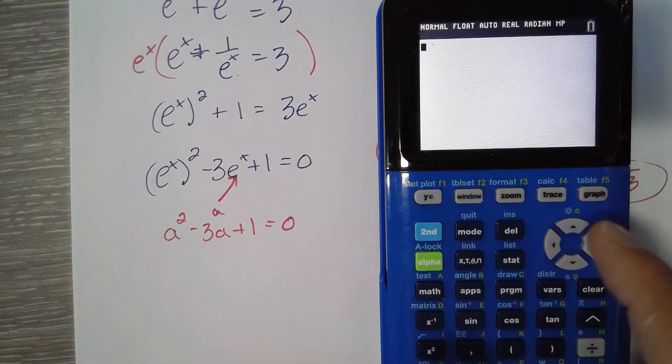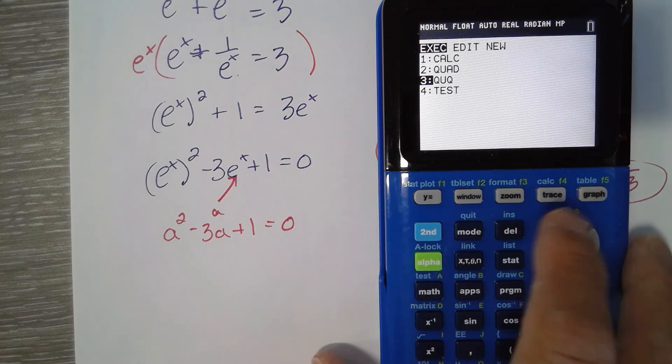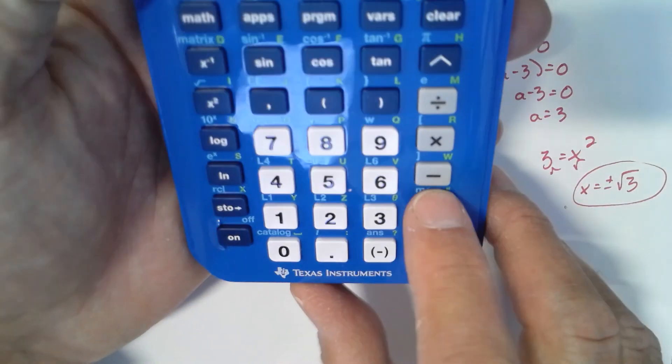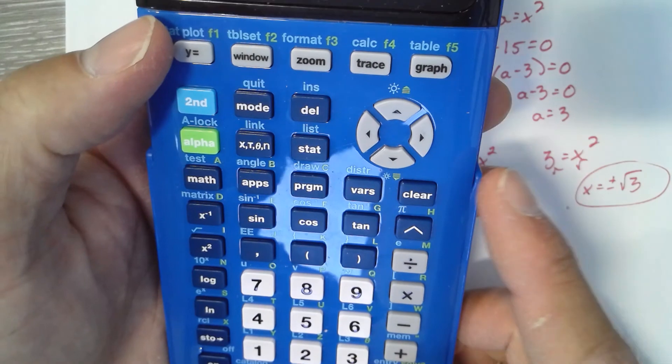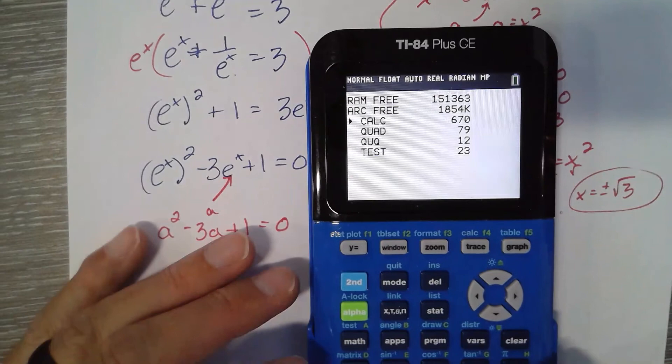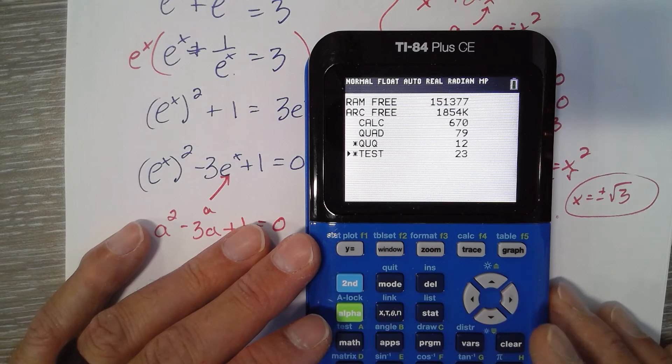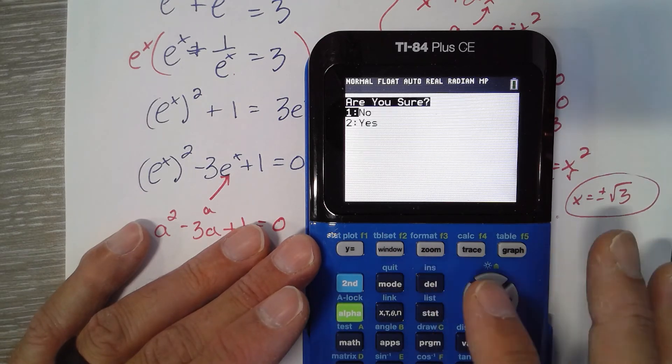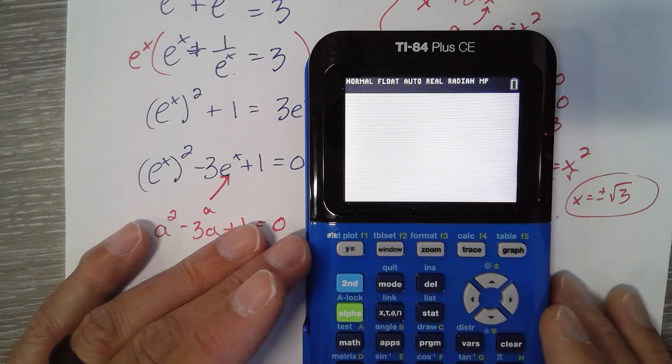I'm going to get rid of the program test. I don't want that in there, and I don't know what QUQ is either. So I'm going to go to memory down here, and I'm going to manage programs. And there's my four programs, and I don't want that one, and I don't want that one.